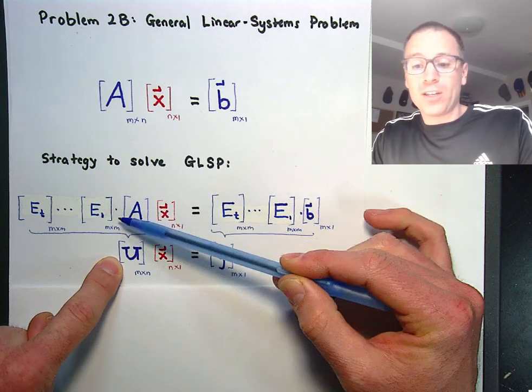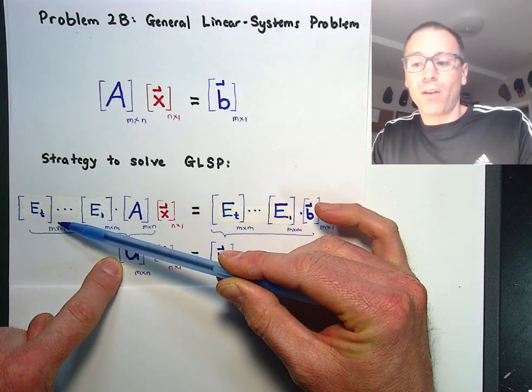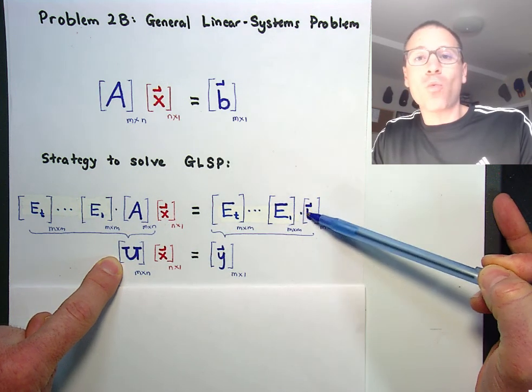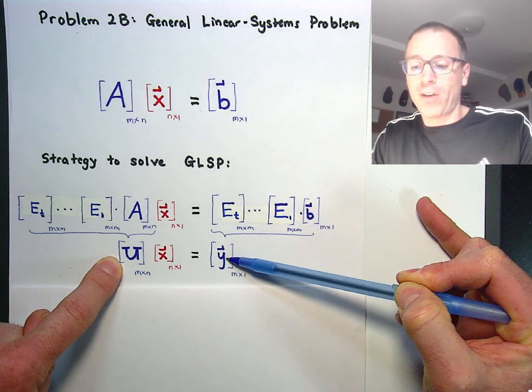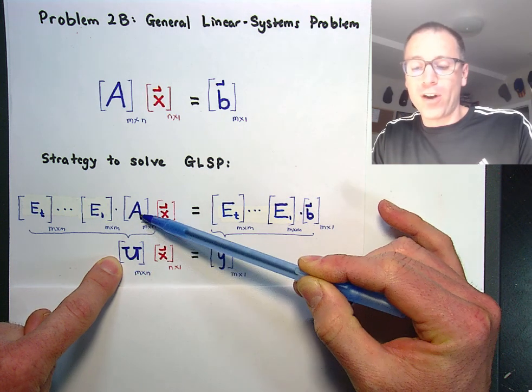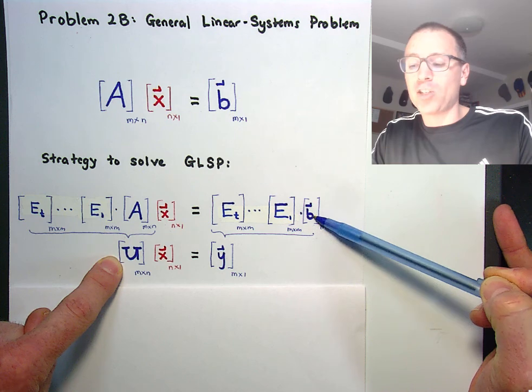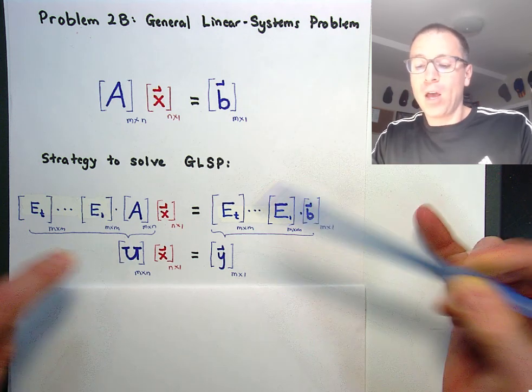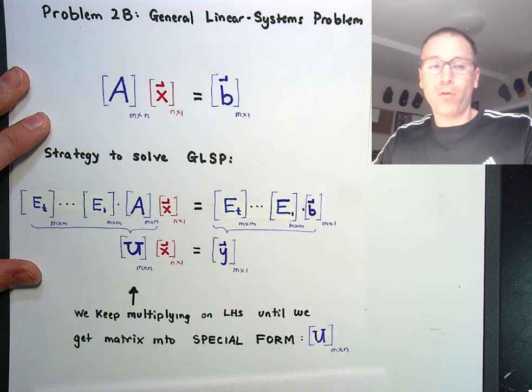If we hit the left-hand side of an equation with a sequence of matrix multiplications on the left, then we've got to do the same thing to the right-hand side of the equation, and so that vector y represents the idea that whatever I do to the matrix A, I must also do to the vector B. When I get this in special form...